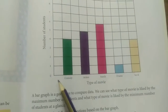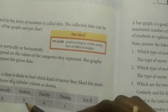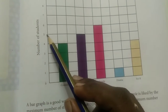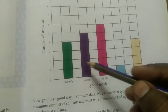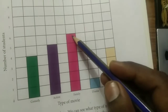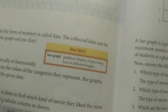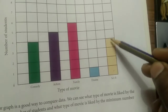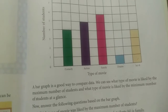Comedy has 4 students, so we draw a bar up to 4. Action has 5, so the bar reaches 5. Family has 6, so the bar reaches 6. Drama has only 1, so a short bar. Science and Fiction has 4 — one, two, three, four columns colored. This is how you draw a bar graph.